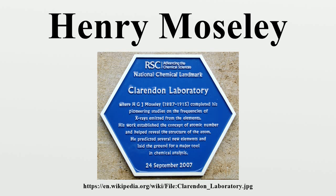Henry Moseley had been a very promising schoolboy at Summerfield School, and he was awarded a King's Scholarship to attend Eton College. In 1906 he won the Chemistry and Physics Prizes at Eton. Also in 1906, Moseley entered Trinity College of the University of Oxford, where he earned his bachelor's degree. Immediately after graduation from Oxford in 1910, Moseley became a demonstrator in physics at the University of Manchester under the supervision of Sir Ernest Rutherford. During Moseley's first year at Manchester, he had a teaching load as a graduate teaching assistant, but following that first year, he was reassigned from his teaching duties to work as a graduate research assistant.